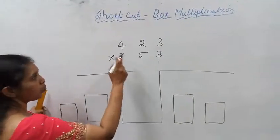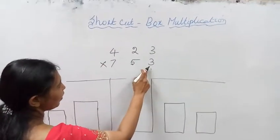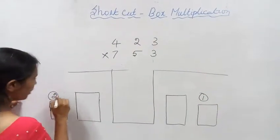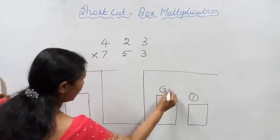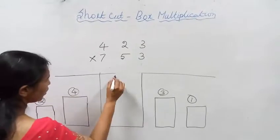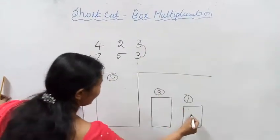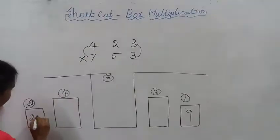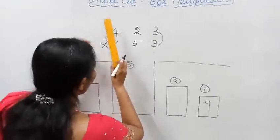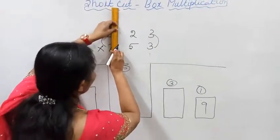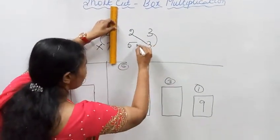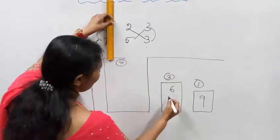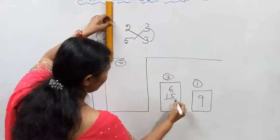Now I am going to multiply 423 into 753. Same method. 1st box: 3 threes are 9. 2nd box: 7 fours are 28. For 3rd box, hide this column — downward plus upward: 2 threes are 6, 5 threes are 15. That is 21.